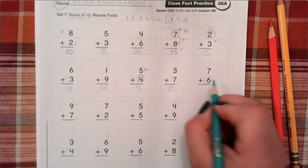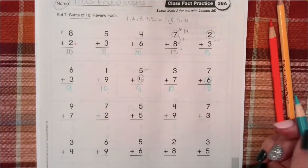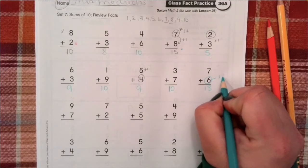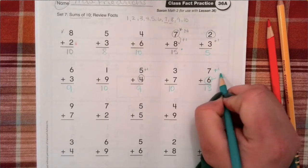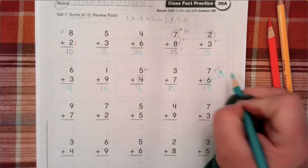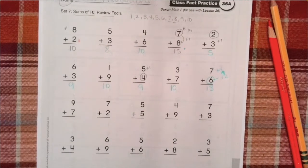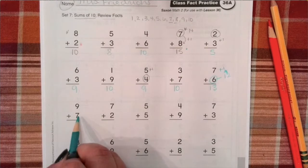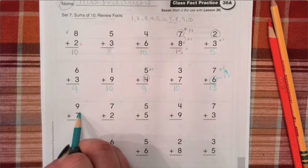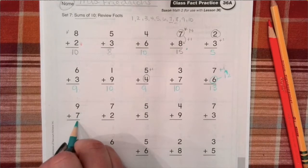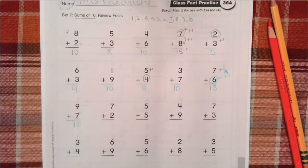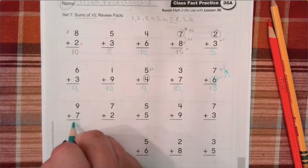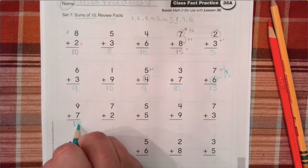Seven plus six is thirteen. I did double six. Six plus six is twelve. And add one more to that because seven is one more than six. Gives you thirteen. Nine plus seven. Remember that's an adding nine fact. So you take the other number. What's one less than seven? Six. And put a one in front of it. Gives you sixteen. So nine plus seven is sixteen.